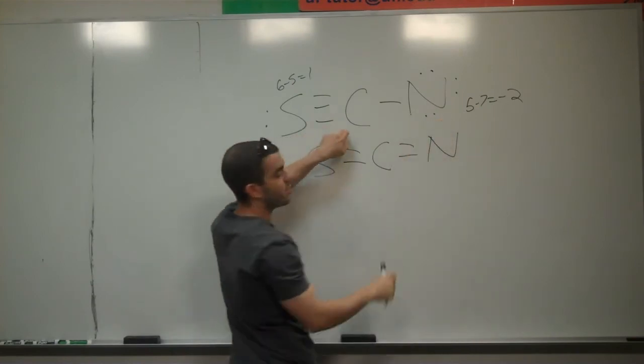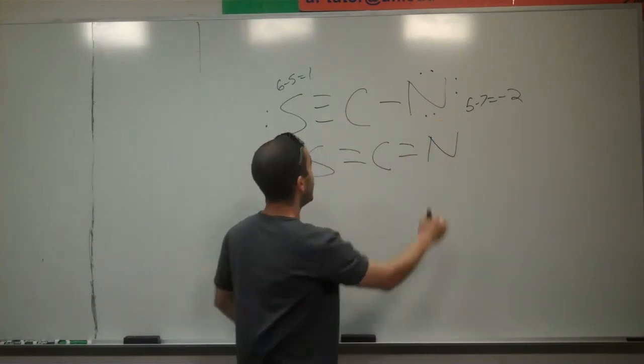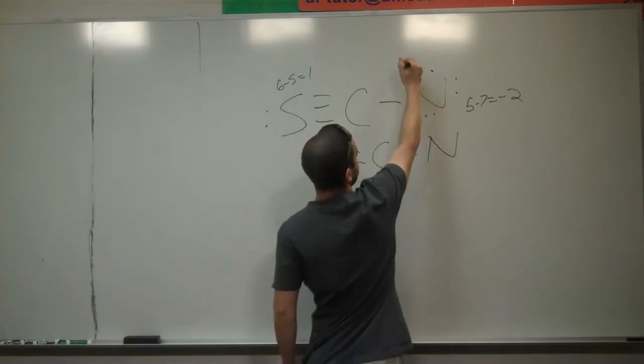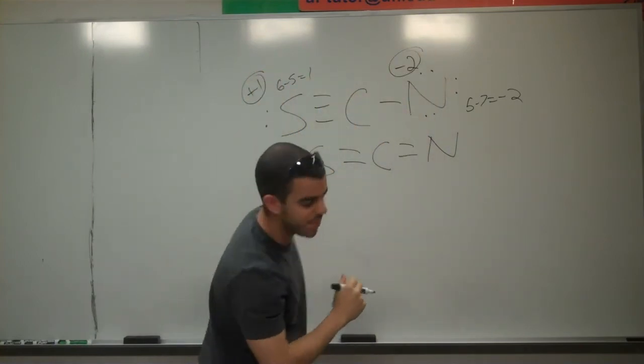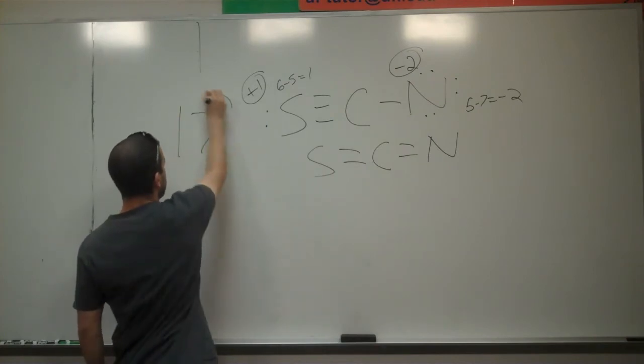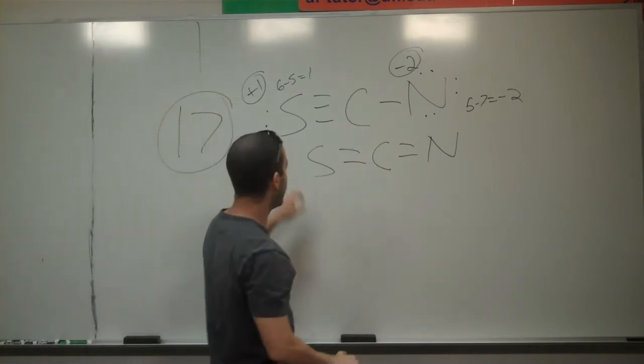So now we've got a minus two and a plus one. So this one's technically a stable system, as long as we have a minus two charge on here, and a plus one charge on here. And I forgot to write the question that I'm doing. I'm doing number 17. So that's one system.